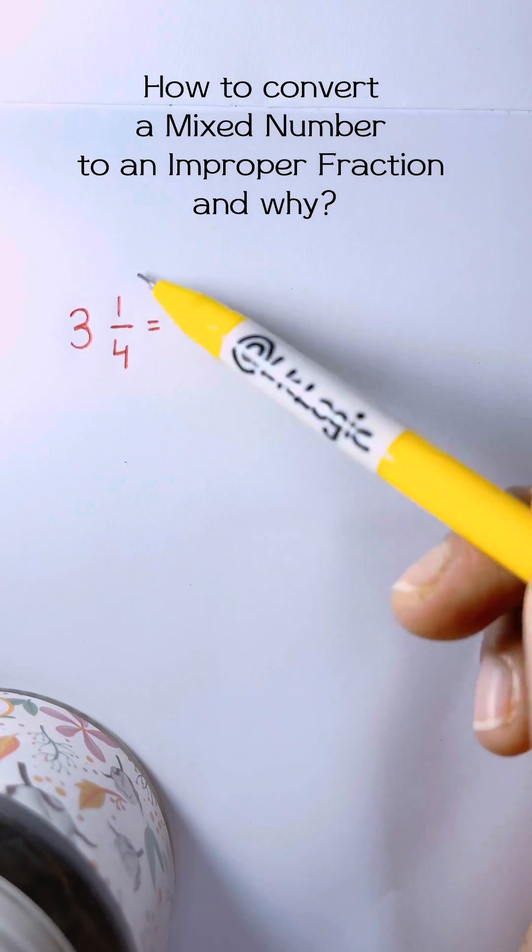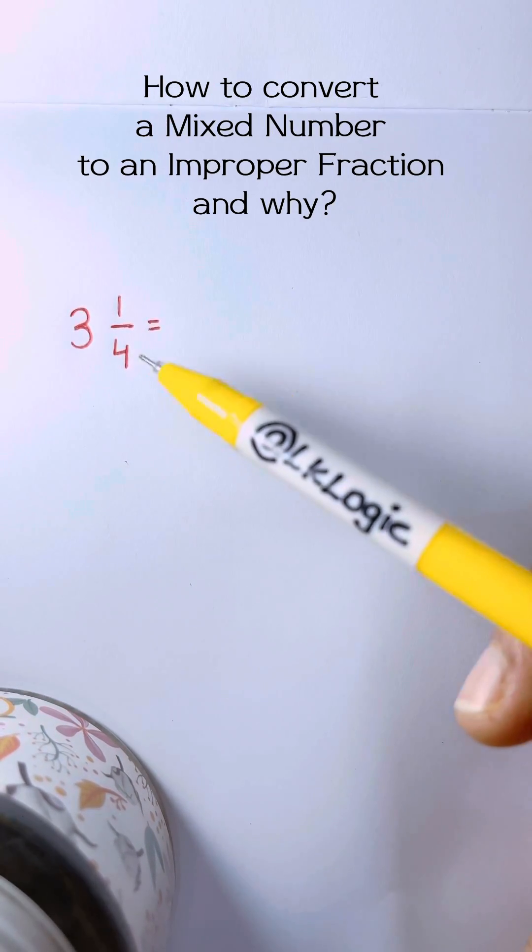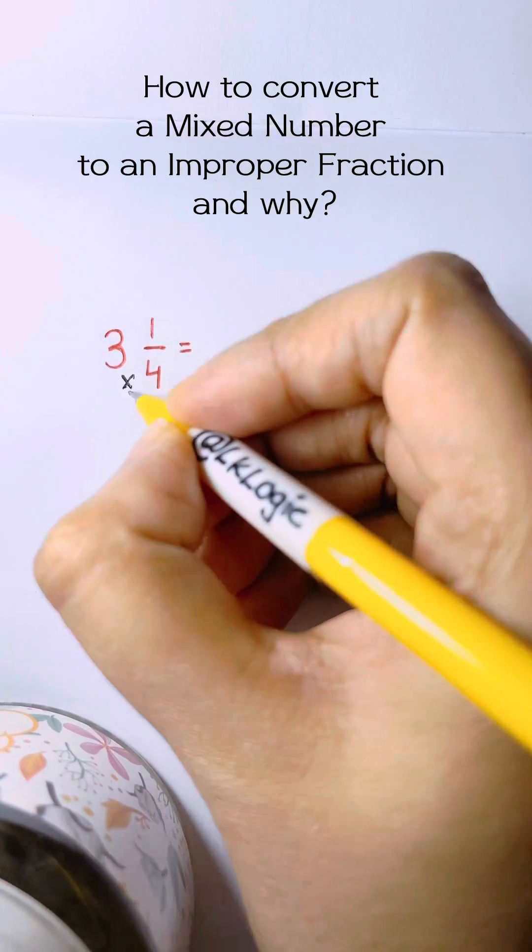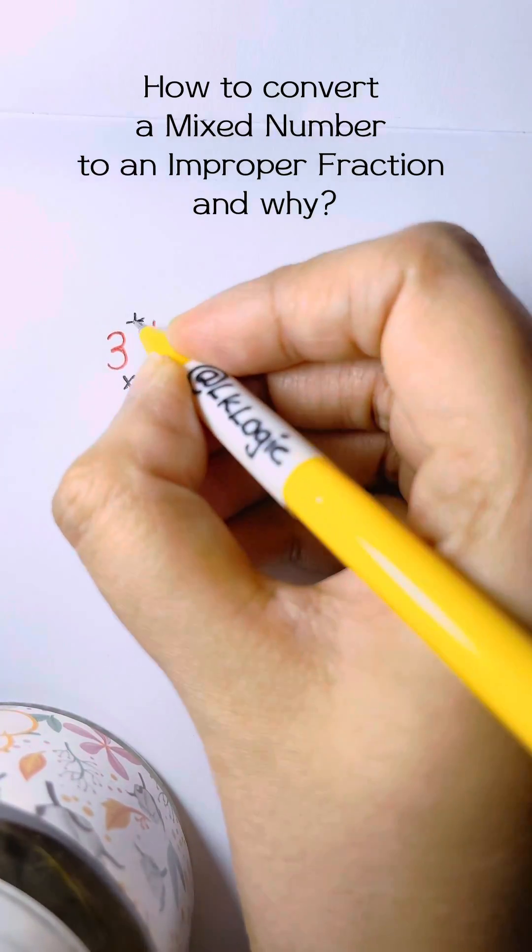How to convert a mixed number into an improper fraction? Well, all you have to do is take the denominator and multiply it with the whole number and add the numerator.